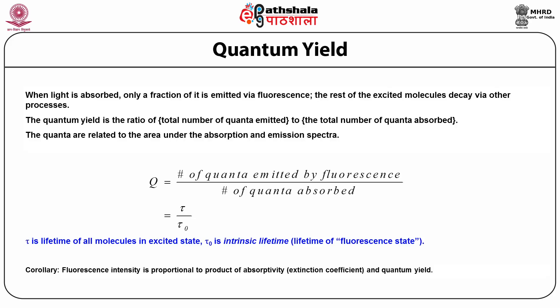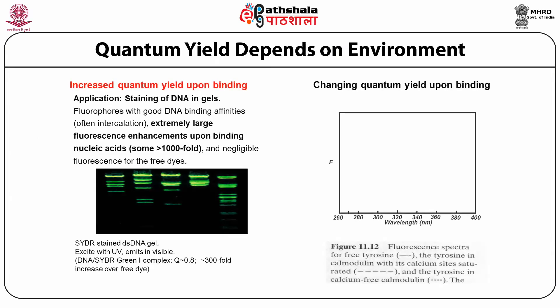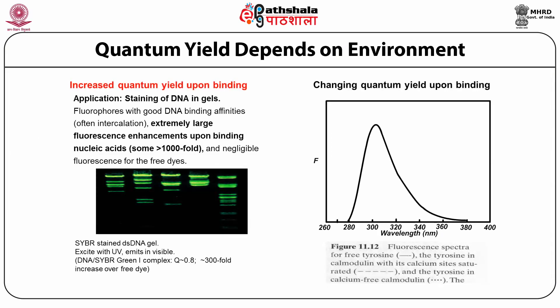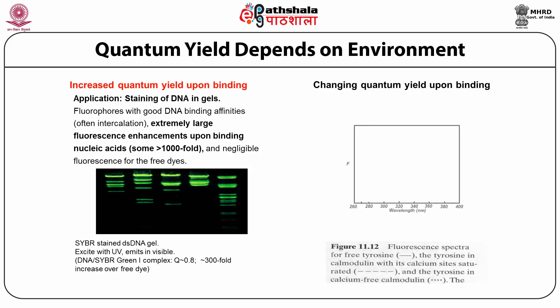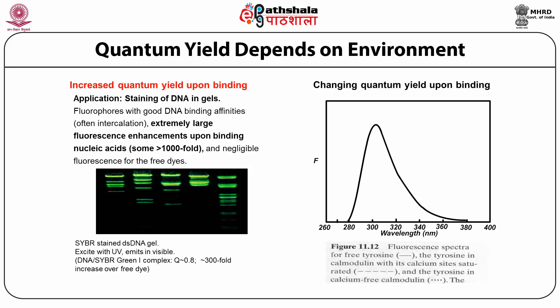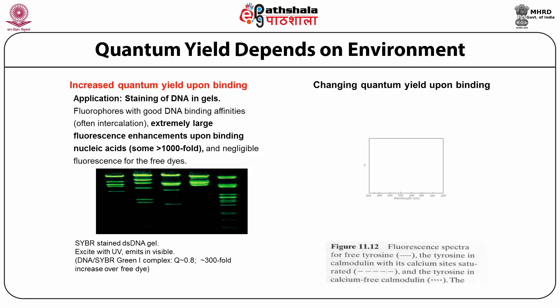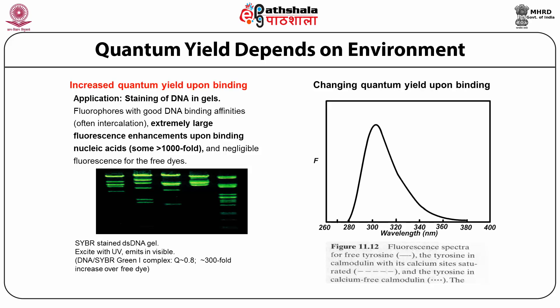Fluorescence intensity is proportional to the product of absorptivity (the extinction coefficient) and quantum yield. The quantum yield depends basically on the environment. Increased quantum yield upon binding is used for the application of DNA staining of gels. Fluorophores with good DNA binding affinities often have extremely large fluorescence enhancement upon binding of the nucleic acid — more than a thousandfold — and negligible fluorescence in free solution. For example, SYBR Green stained with double-stranded gels excited with UV emits in the visible.